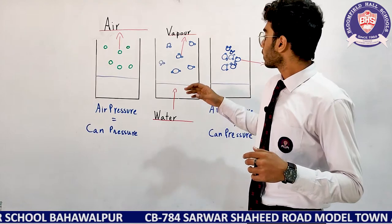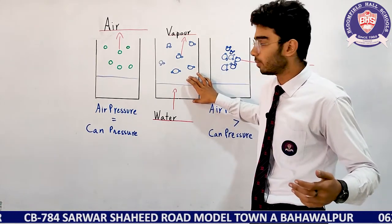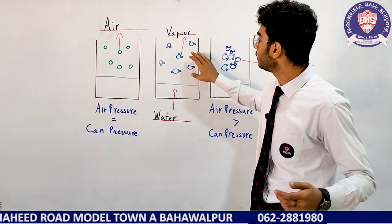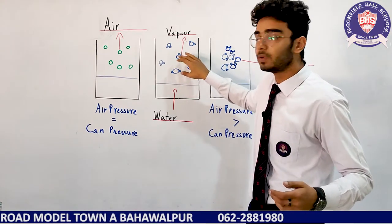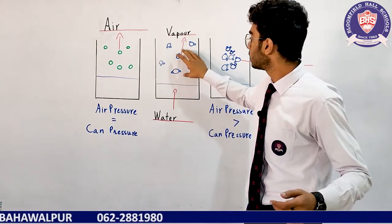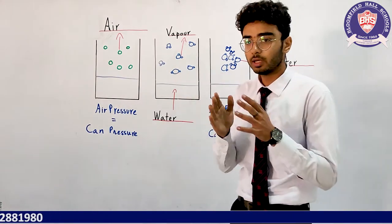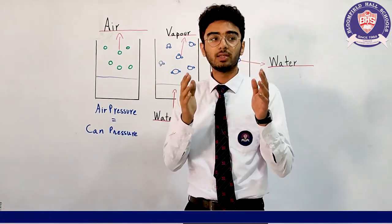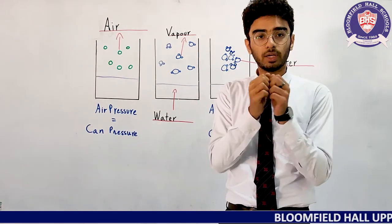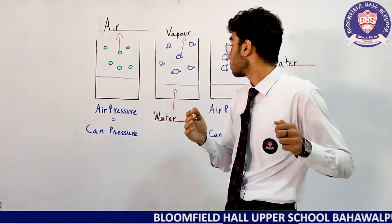Now the can is heated on top of a burner or any sort of flame. This causes the water to evaporate into water vapor, which takes the place of the air inside the can. This fills up the can — instead of water, there is water vapor spread across the can. These water molecules are spread out; instead of being tightly compacted in liquid form, they are now in a gas form.